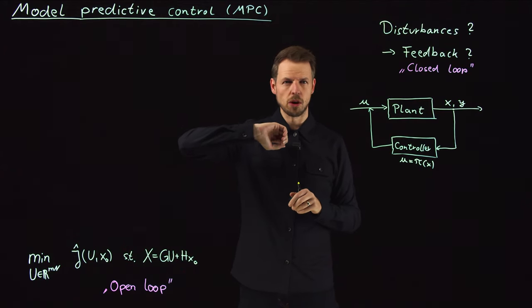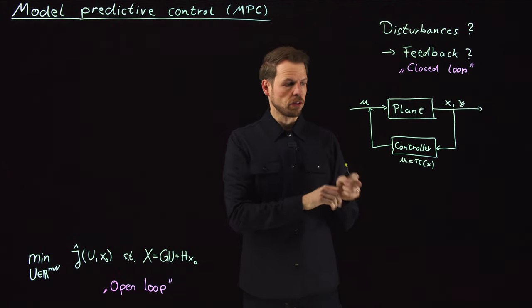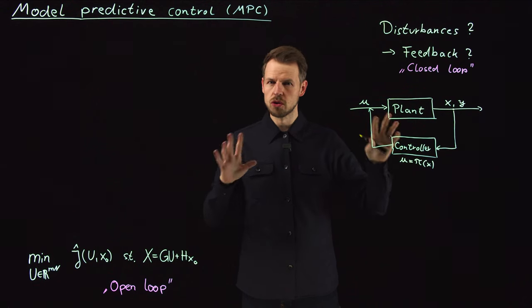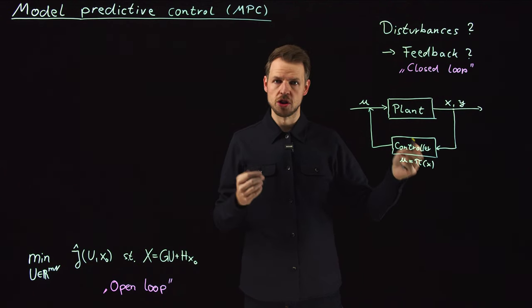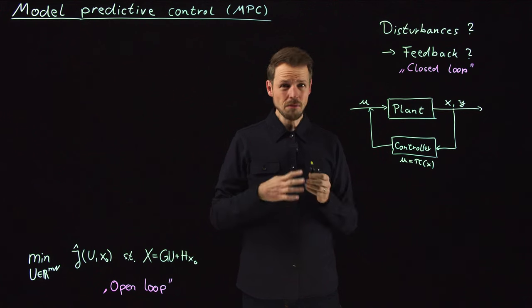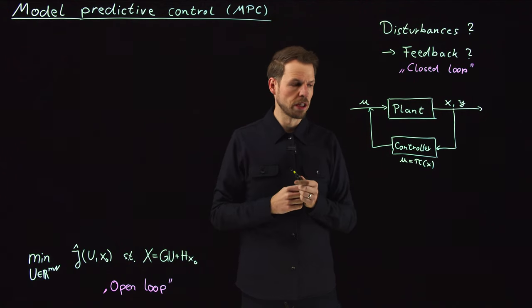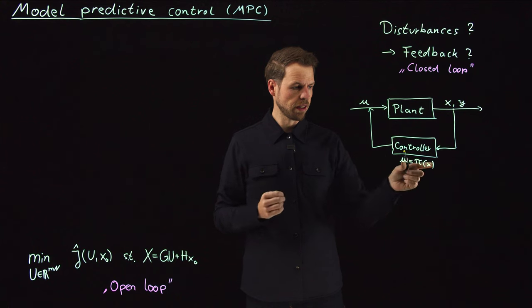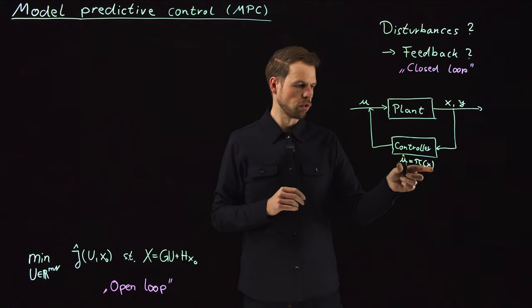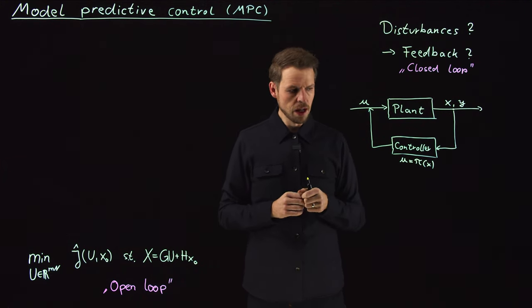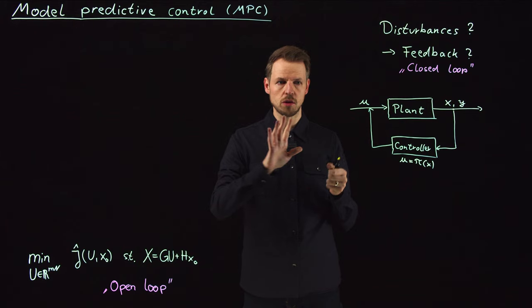And so the question is now, why did we call this video model predictive control? Because this is a particular technique to realize this controller. So the field of control theory is gigantic and you can have all sorts of things. Classical control would mean to try to derive a maybe algebraic relation between input and output. In deep learning or machine learning, you can try to learn this π using deep neural networks. Reinforcement learning is a very popular topic in this area. And we will talk about learning-based control approaches also in the upcoming videos. But for now, what we want to use is we want to combine our model with this framework. And this is what model predictive control means.